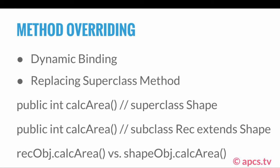Next, let's take a look at method overriding, which is also known as dynamic binding. In method overriding, you replace the superclass method. Let's say we're in the superclass Shape, and we have a method called public int calcArea. Now we have a subclass Rec which extends Shape, and in that subclass we also have public int calcArea. Both declarations have some code, but the code is different between the two.